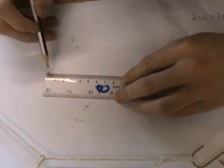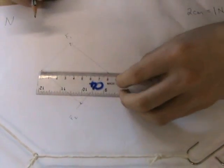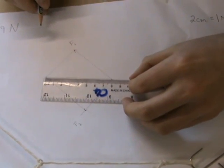The diagonal is eight centimeters. This corresponds to four Newtons which will be equal and opposite to F3.